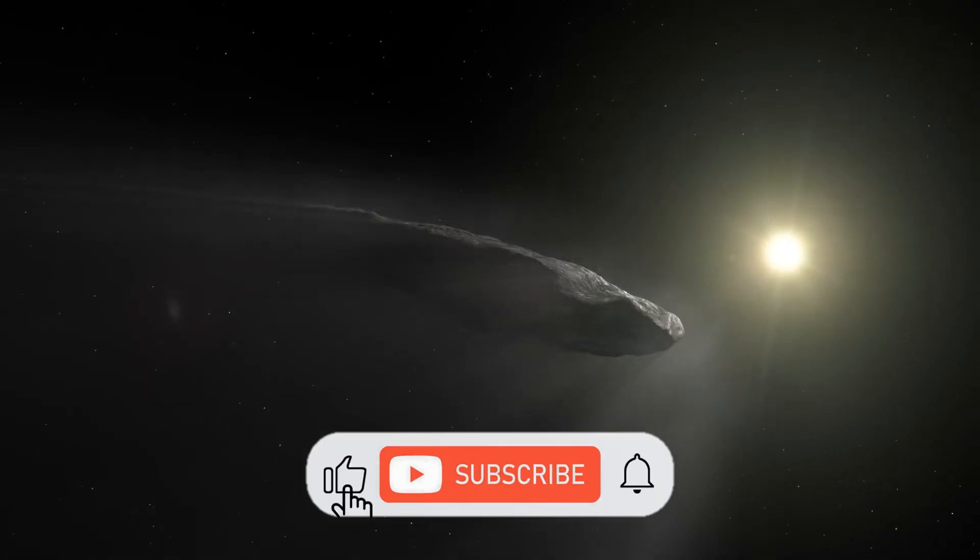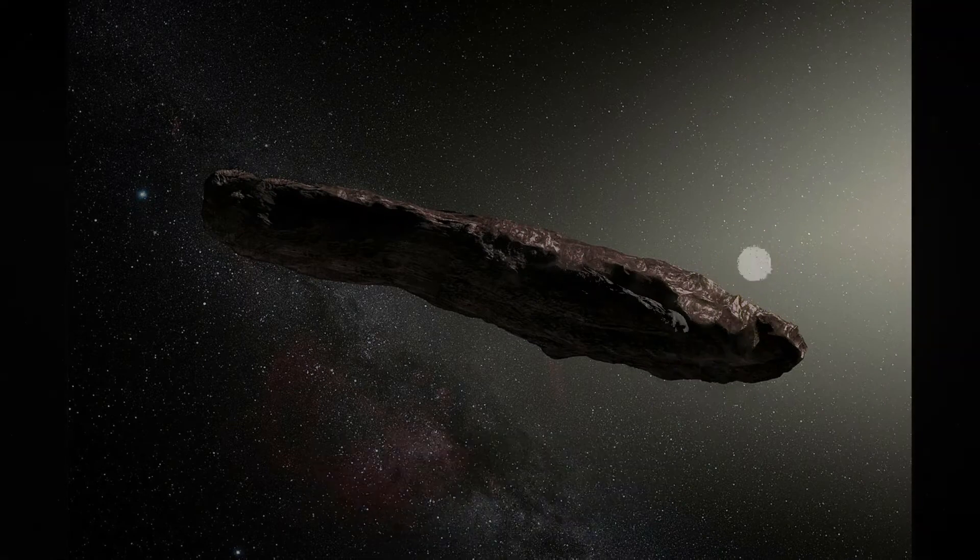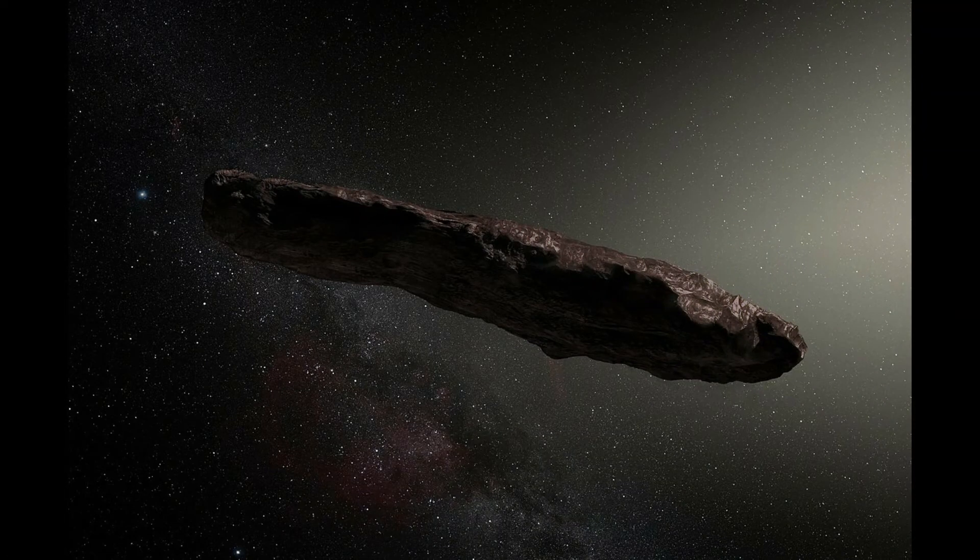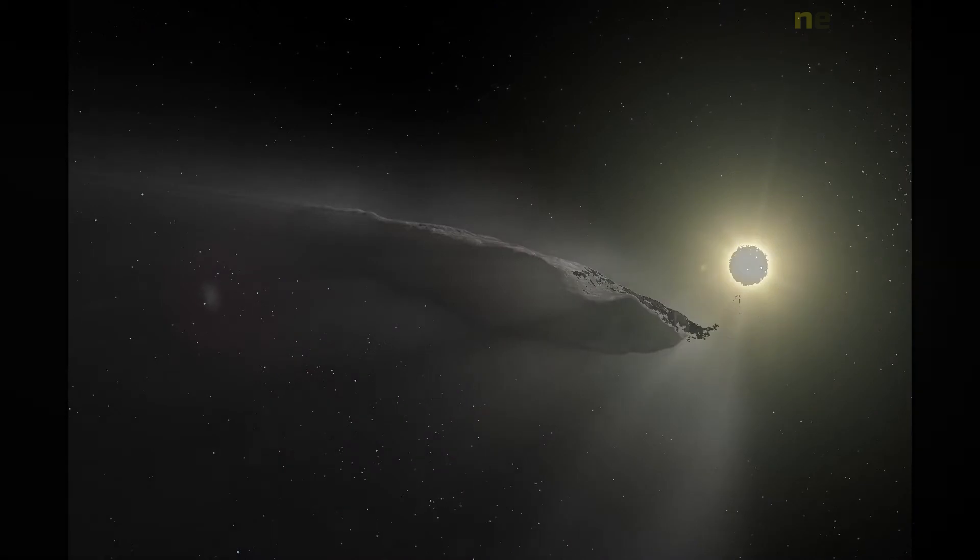Oumuamua is the first interstellar object detected passing through the solar system. Formally designated 1I/2017 U1, Oumuamua was discovered by Robert Warrick using the Pan-STARRS telescope at Haleakala Observatory, Hawaii, on 19 October 2017.